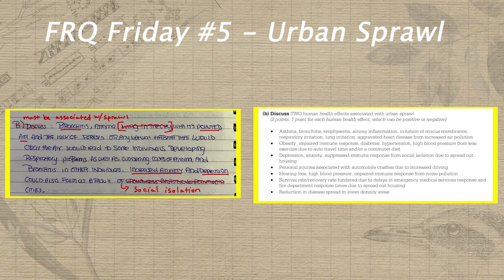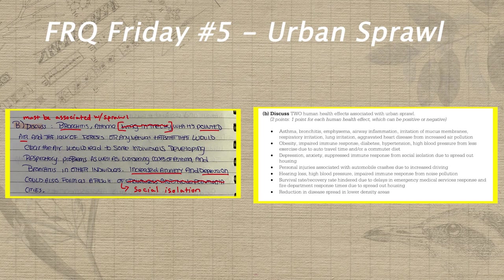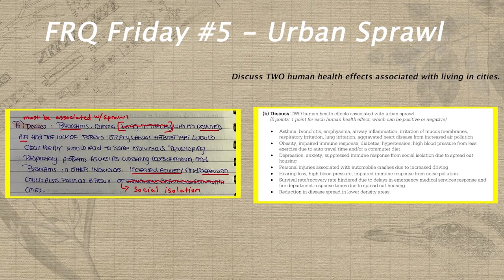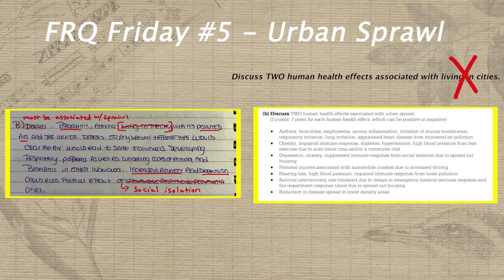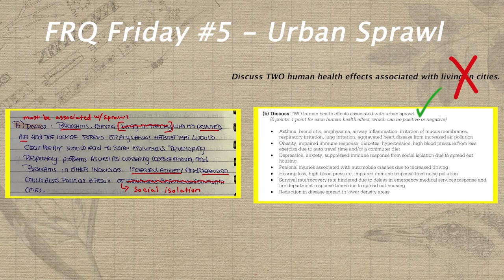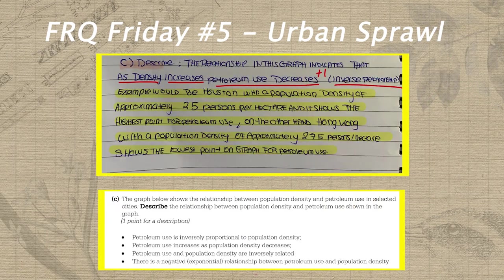This is a great example of what I like to call giving a great answer to the wrong question. Basically, Lean provided two stellar answers to the prompt 'discuss two human health effects associated with living in cities,' as opposed to the actual prompt, which was to discuss two human health effects associated with urban sprawl. They seem similar, but the subtle difference here can cost you points.